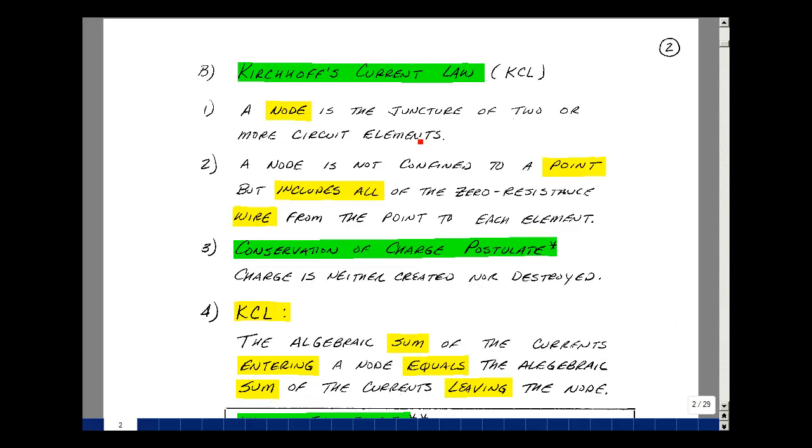Two prongs on the plug, and you plug that into a wall outlet. Suppose you plug another lamp into the outlet right below it, and those two prongs constitute two nodes. But the node is not just confined to the prong or the point of connection, but it includes all of the zero resistance wire associated with it.